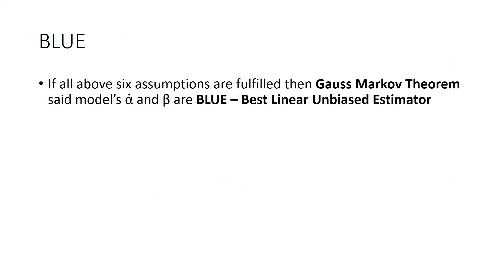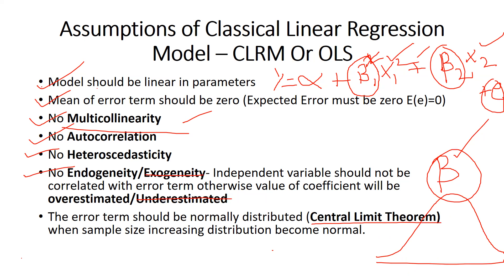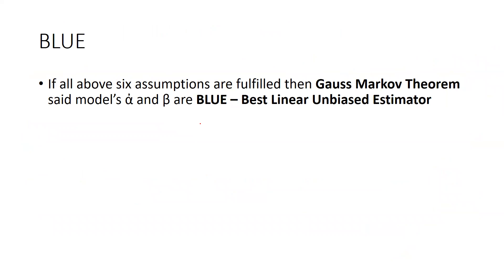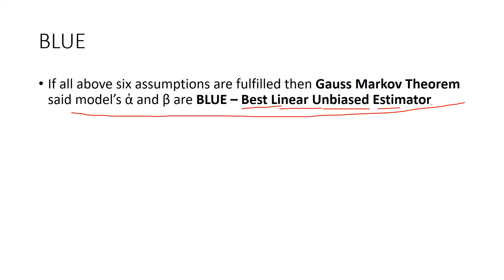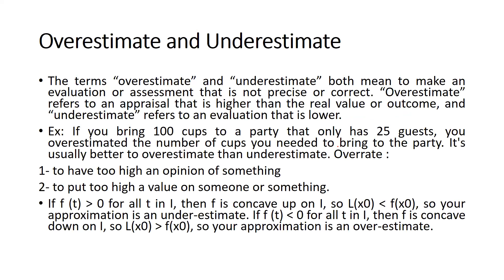As the Gauss-Markov theorem states, if all these six assumptions are fulfilled and held by a model, then our estimators alpha and beta are BLUE — Best Linear Unbiased Estimator. That means our model is absolutely correct. We fulfill this condition known as BLUE: the model is best, linear, unbiased, and the estimators are correct.